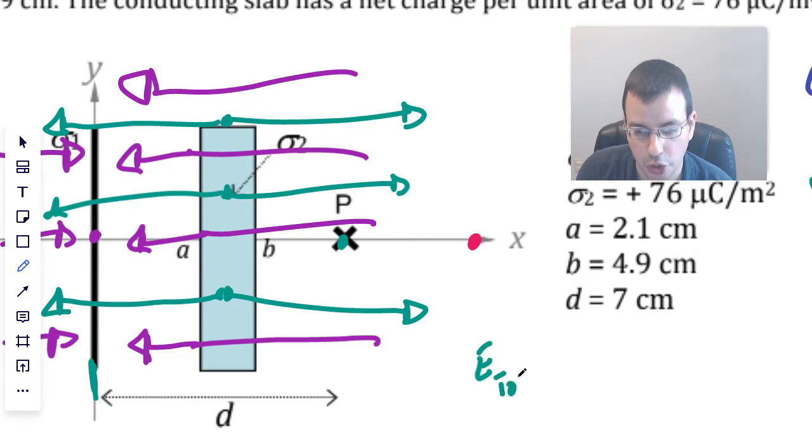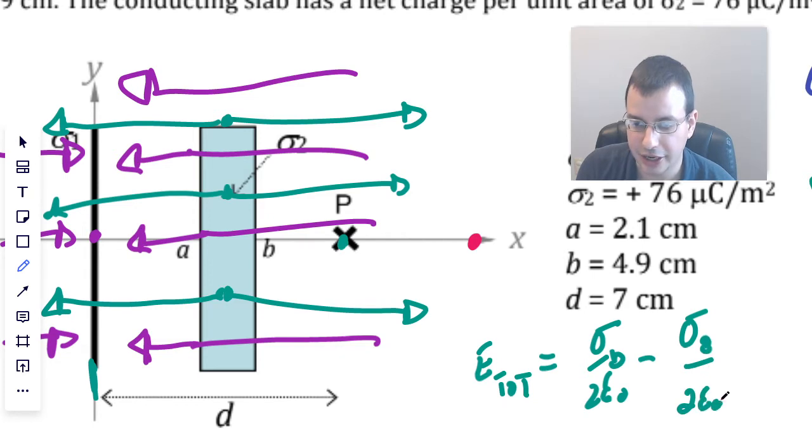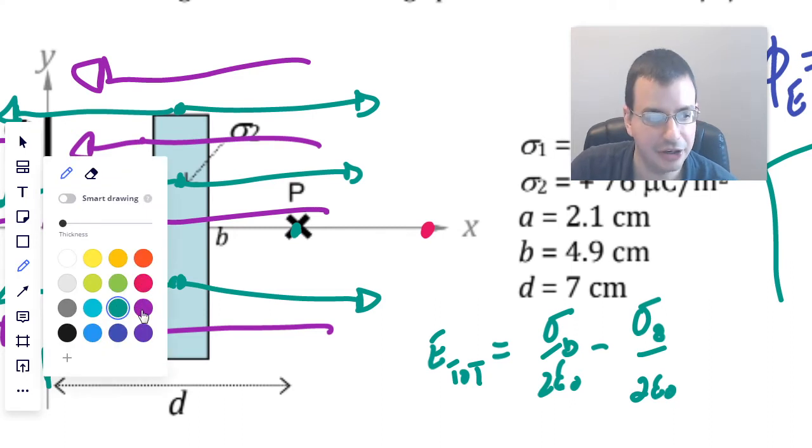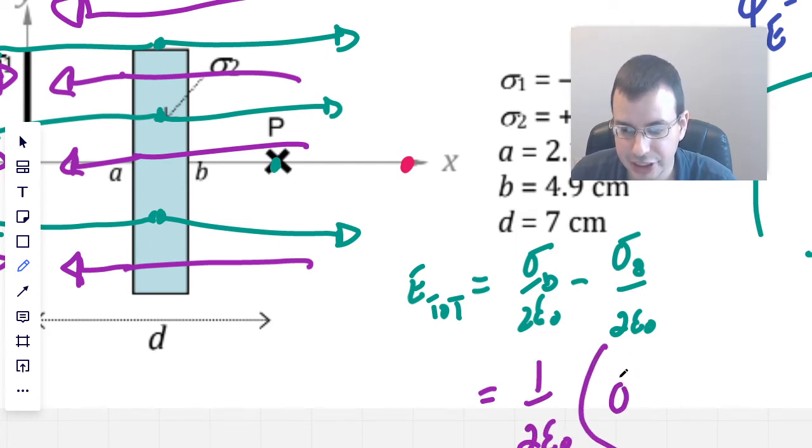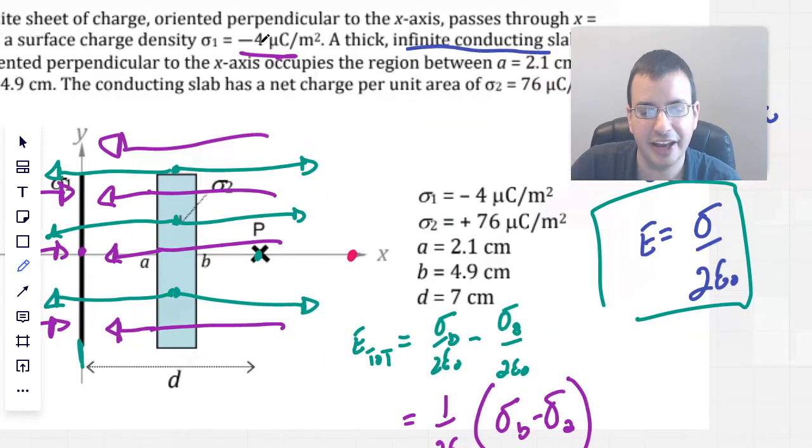So we're going to say the electric field total equals sigma over 2 epsilon naught. So that's going to be sigma, and I'll call this B because this is the one that I'm going to say is positive, minus sigma A over 2 epsilon naught. Now they'd both really be added to each other, but sigma A is negative so I just move the negative out into a subtraction sign. So do a little bit more math here. So we have 1 over 2 epsilon naught times sigma B minus sigma A.